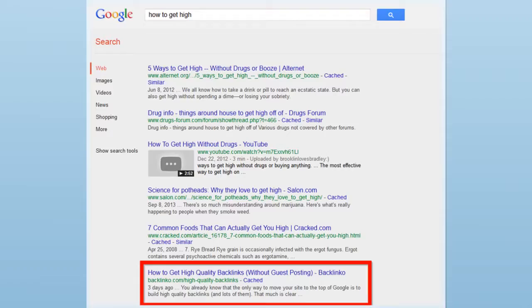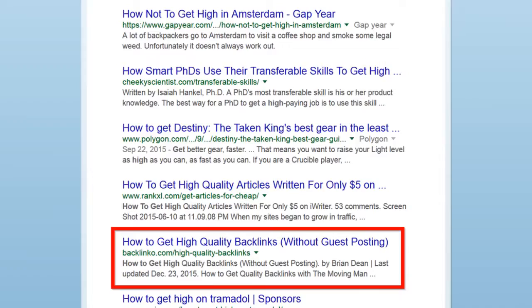And Google took action. A few weeks later, my page dropped like a stone for the keyword How to Get High. It literally went from number 6 to 12 to 21 to 33 in a matter of days. But check this out, my ranking for the keyword High Quality Backlinks didn't drop.